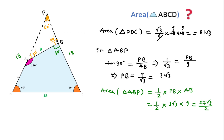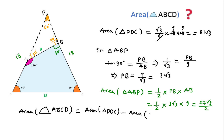Since we have to find the area of quadrilateral ABCD, we can write: Area of ABCD = Area of triangle PDC − Area of triangle PAB = 81√3 − 27√3/2 = 135√3/2 square units.